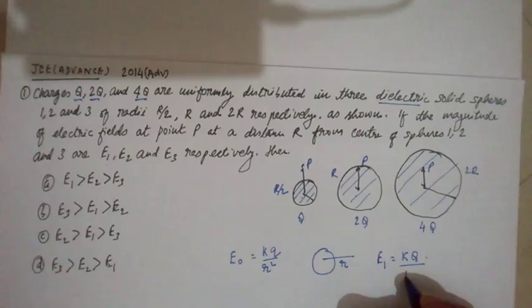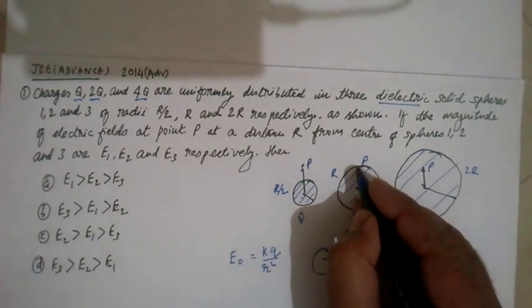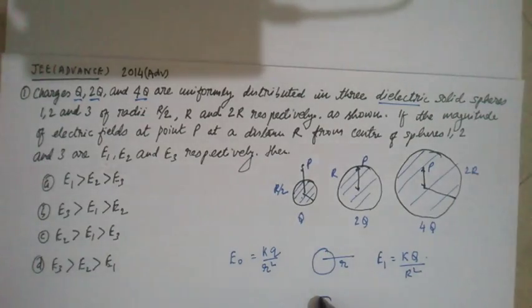In the first case we will get E1 equals KQ/R². In the second case it is on the surface, so what is electric field on the surface? It is simply KQ/r². So E2 is K times the charge, which is 2Q, and the radius is exactly r, so r².